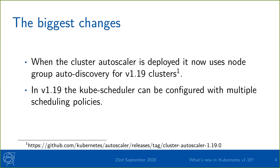Node group auto discovery makes things a lot easier for auto scaling. The updated version of the auto scaler is mentioned in the release notes, and the full release notes are in the auto scaler releases. Also in 1.19, the kube scheduler can be configured to have multiple scheduling policies that you can use on a per-deployment basis, which works very well with the cluster auto scaler because scheduling policies heavily affect the efficiency of auto scaling, especially for scaling down.